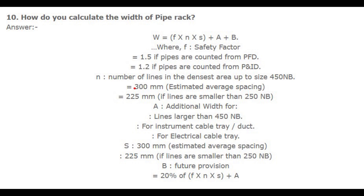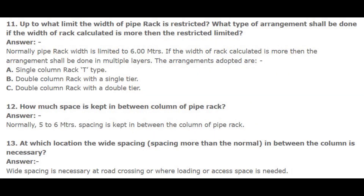Number 10: How do you calculate the width of pipe rack? Answer: W = f × n × s + a + b, where f = safety factor (equals 1.5 if pipes are counted from PFD; equals 1.2 if pipes are counted from P&ID); n = number of lines in the densest area up to size 450 NB; s = 300 mm estimated average spacing (225 mm if lines are smaller than 250 NB); a = additional width for lines larger than 450 NB, for instrument cable tray and duct, and for electrical cable tray; b = future provision equals 20% of (f × n × s + a).